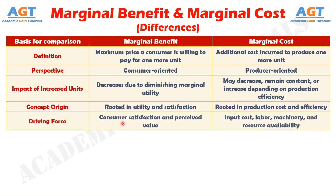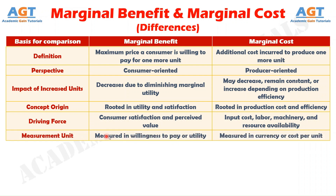Number five: marginal benefit is driven by consumer satisfaction and perceived value, whereas marginal cost is driven by labor, materials, and operational efficiency. Number six: marginal benefit is typically measured in utility or willingness to pay, whereas marginal cost is measured in monetary terms per additional unit produced.